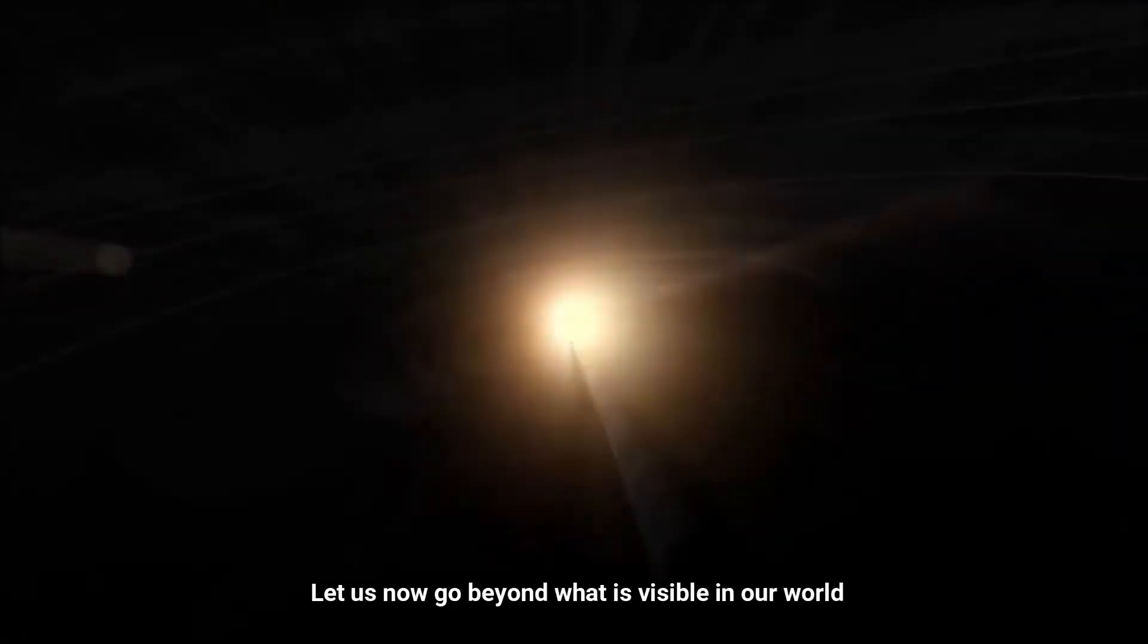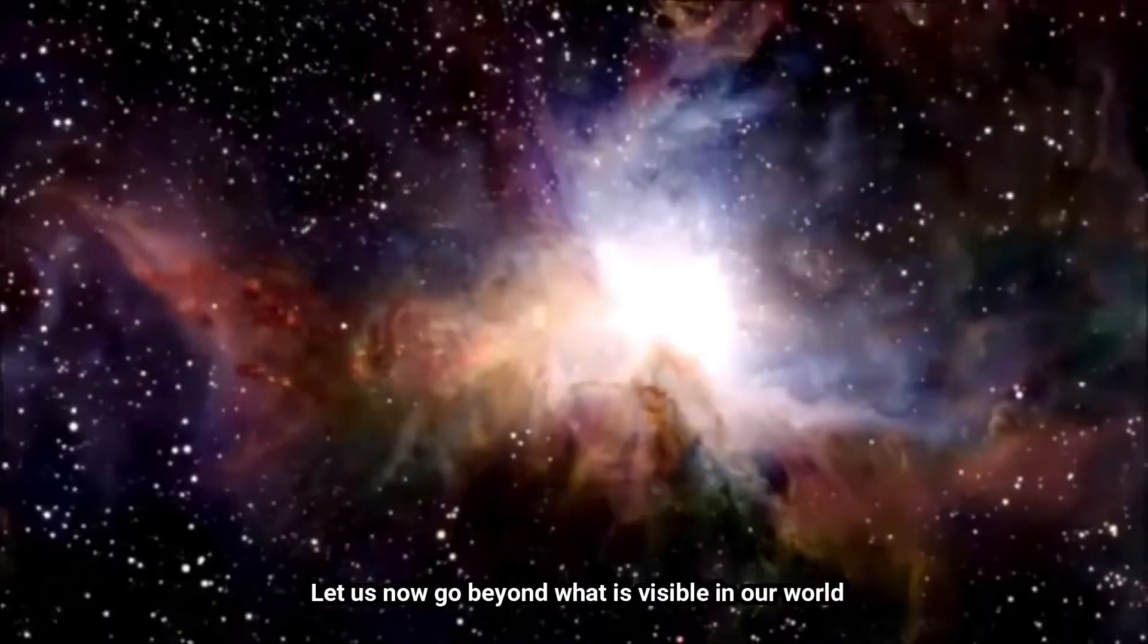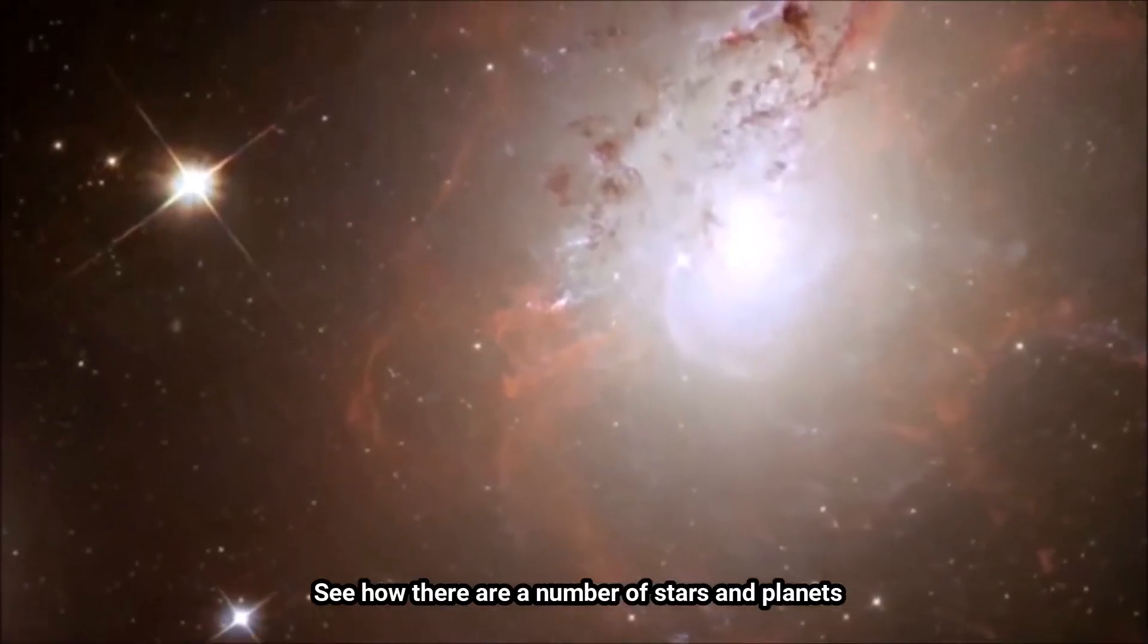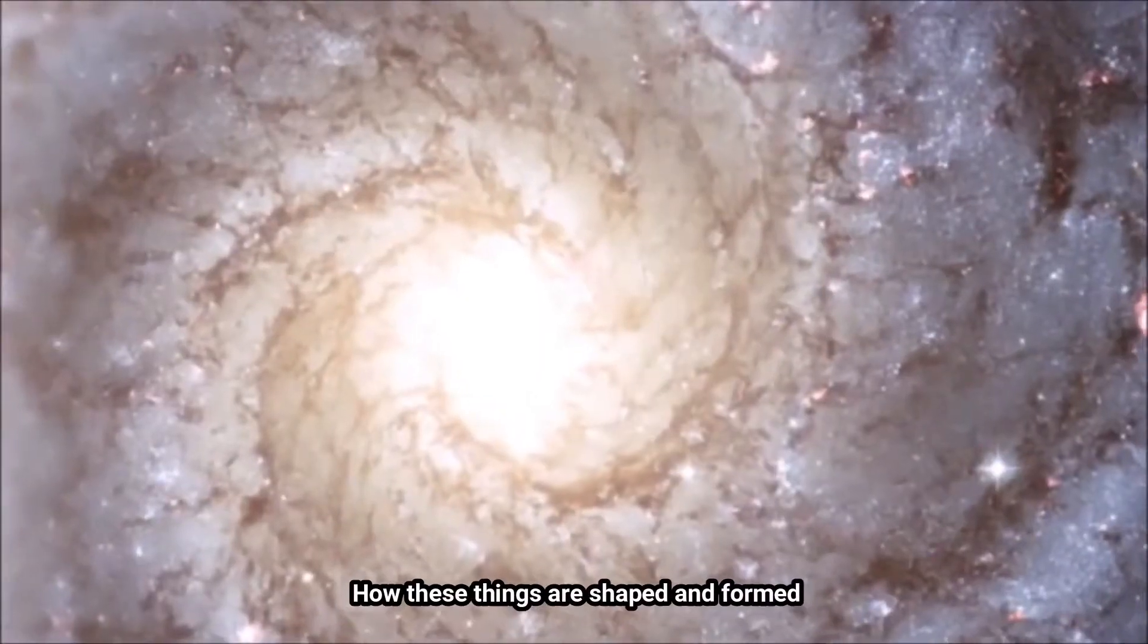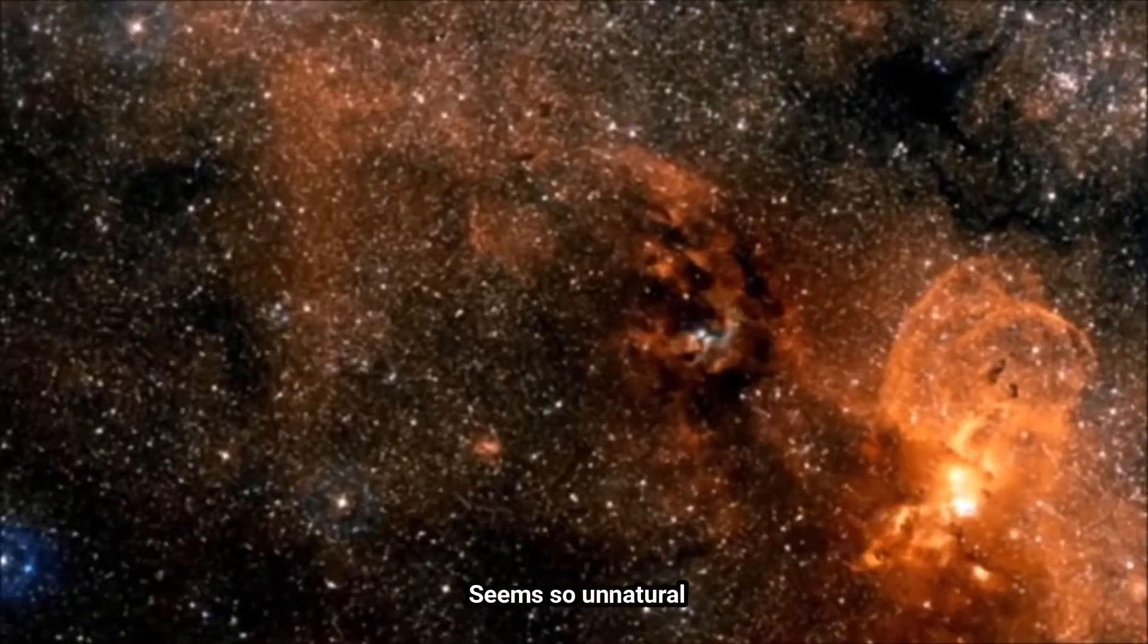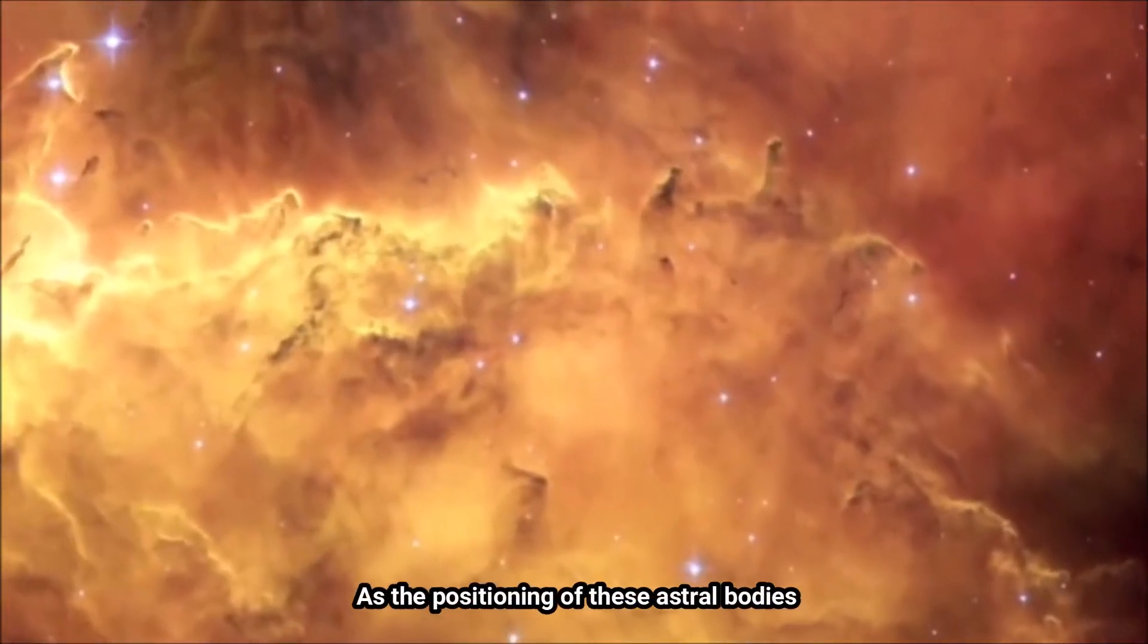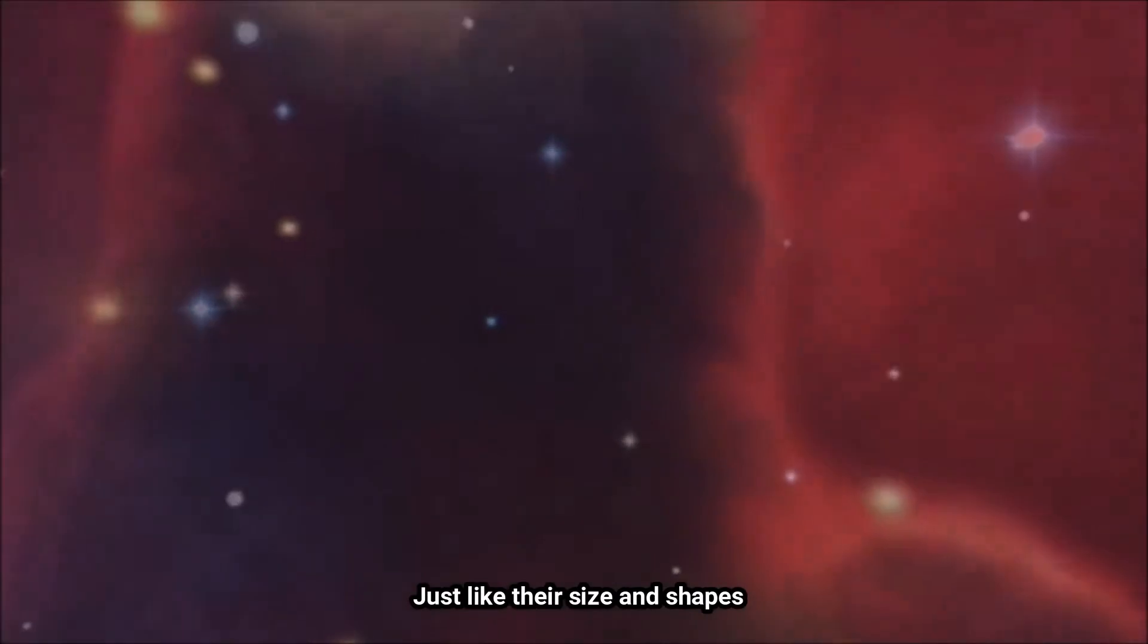Let us now go beyond what is visible in our world and look at the outer space. See how there are numbers of stars and planets. How these things are shaped and formed and even spaced from each other seems so unnatural. But this is something done with the aid of math, as the positioning of these astral bodies are perfect in proportion, just like their size and shapes.